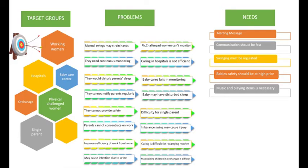From the Define phase, we identified problems and needs for our target customers, which include working women, baby care centers, hospitals, orphanages, single parents, and physically challenged women. Problems with the traditional cradle include: manual swings may strain hands, need for continuous monitoring, disturbed parent sleep, inability to provide baby safety, inability to concentrate on work, risk of infection due to urine, disturbed baby sleep, difficulty for single parents, baby care monitoring failures, and inefficient hospital care. The needs demanded by target customers include: alerting messages, fast communication, high baby safety, regulated swinging, and music or play items.